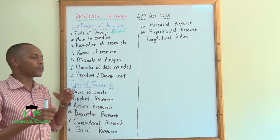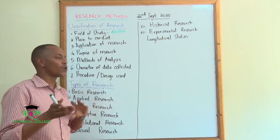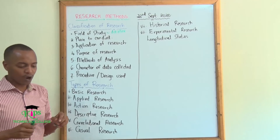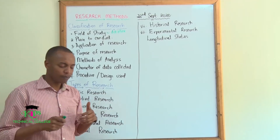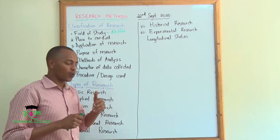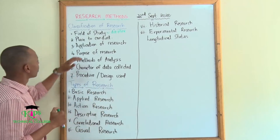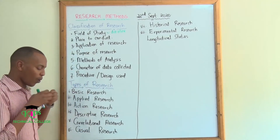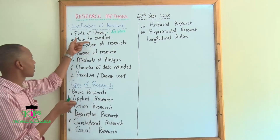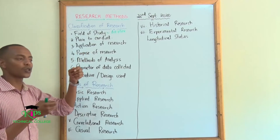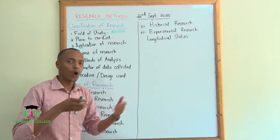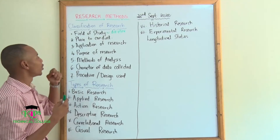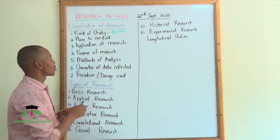When you are classifying types of research, you have to consider different things. You have to know: will it be field research? So you need to know where you will conduct that research as the second classification — will you do it in the field, will you do it in the lab, and so on.